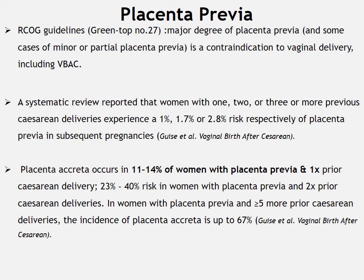Placenta previa is the second major complication of vaginal birth after caesarean section. According to RCOG guidelines, major degree placenta previa and some cases of minor or partial placenta previa are contraindications to vaginal delivery including VBAC. A systematic review reported that women with one, two, or three or more previous caesarean deliveries experience 1%, 1.7%, or 2.8% risk respectively of placenta previa in subsequent pregnancies. Placenta accreta occurs in 1 to 14% of women with placenta previa and one prior caesarean, 23 to 40% with two prior caesareans, and up to 67% with five or more prior caesarean deliveries.